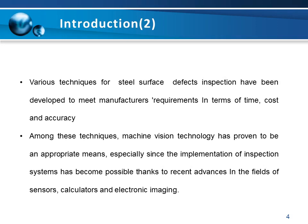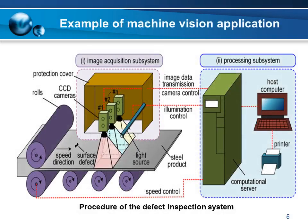Among those techniques, machine vision technology has proven to be an appropriate means, especially since the implementation of inspection systems has become possible thanks to recent advances in the fields of sensors, calculators, and electronic imaging. This figure shows the procedure of the steel defects inspection system, which consists essentially of one or more cameras, a specific lighting device, an image acquisition module, and a processing unit.